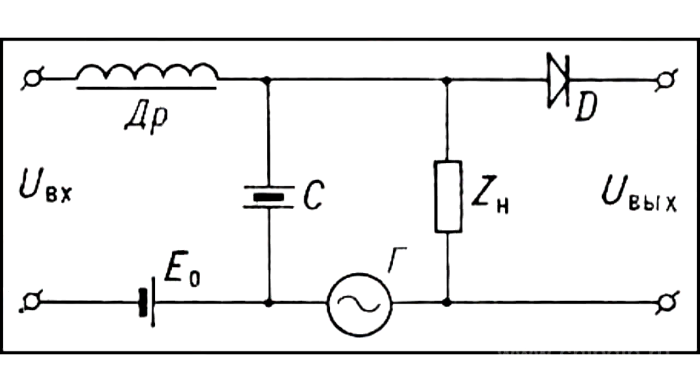A dielectric amplifier is an amplifier of electrical oscillations in which amplification is produced by a change of capacitor capacitance with a ferroelectric when the voltage supplied to it is changed. The figure shows the typical amplifier stage of a dielectric amplifier.